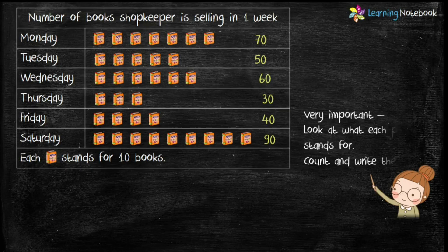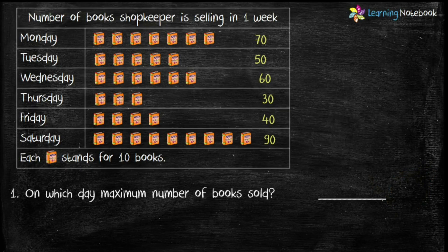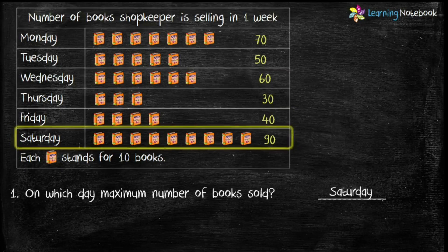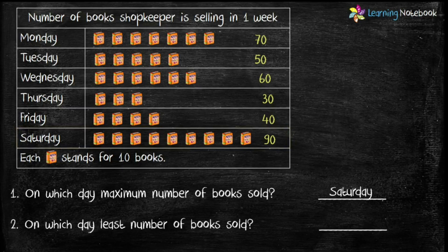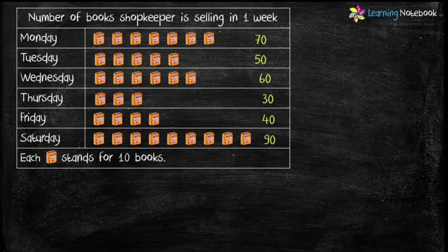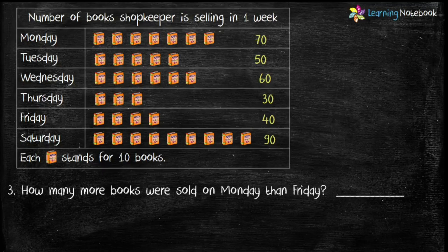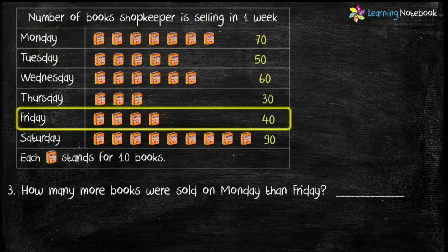Now let's answer the questions. Question 1: On which day was the maximum number of books sold? The highest number of books sold is on Saturday, which is 90. Question 2: On which day was the minimum number of books sold? As you can see, it is Thursday. Question 3: How many more books were sold on Monday than Friday? Books sold on Monday is 70, and on Friday is 40. Subtracting 40 from 70, we get the answer as 30.